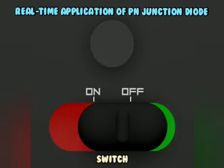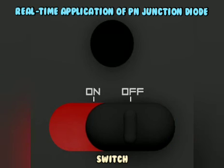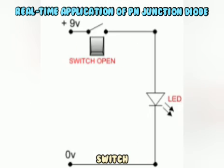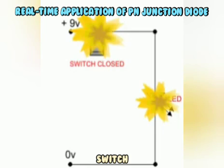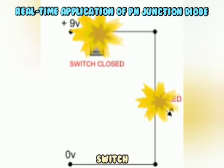Regarding real-time applications, the main purpose of calculating the pn junction diode current and voltage values is that when applying the diode in a real-time application such as a switch, we need to find the supply voltage to give as input and the current flowing through the switch. Only then can we connect the load according to the parameters obtained. To apply the diode in any practical application, we must relate voltage and current values. If you have any doubts, you can ask. Thank you.